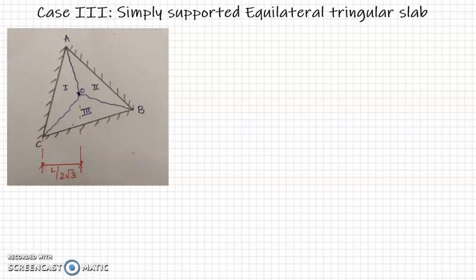Let us study the yield line analysis for a simply supported equilateral triangular slab. The figure shows an isotropically reinforced triangular slab, and the ultimate moment of resistance mu will be same in all directions.